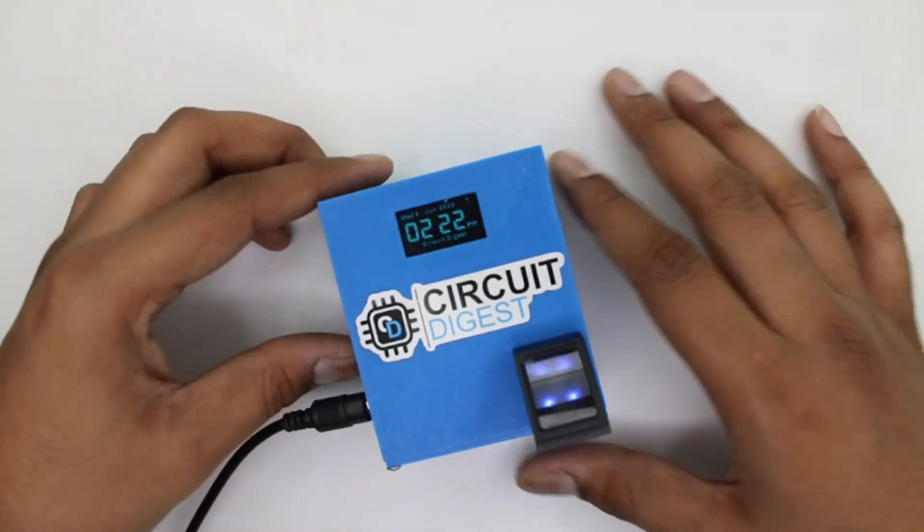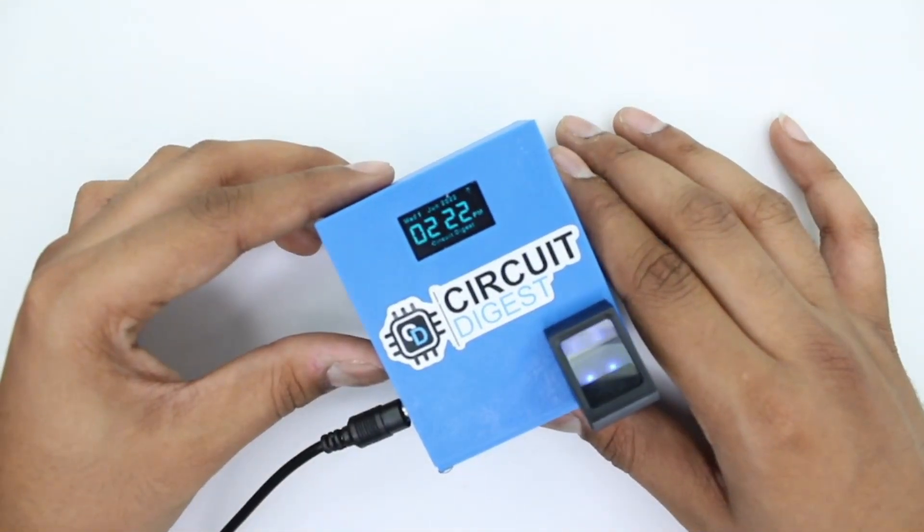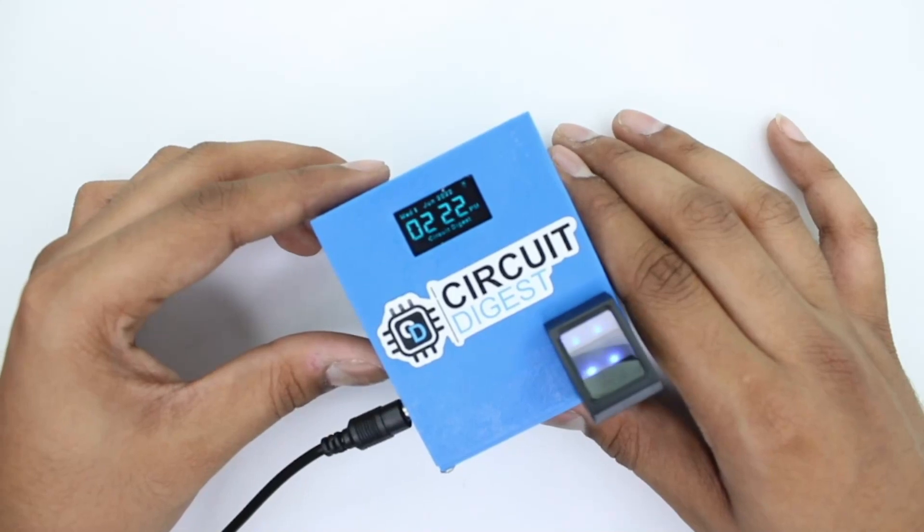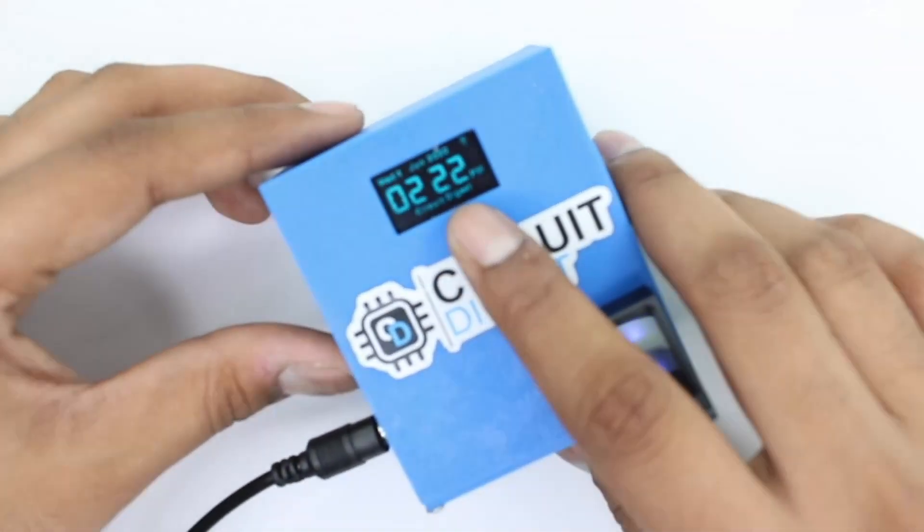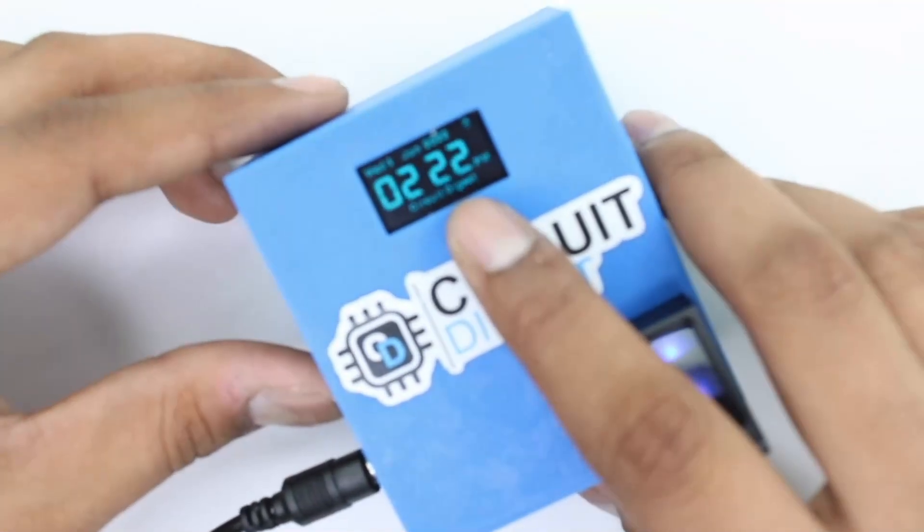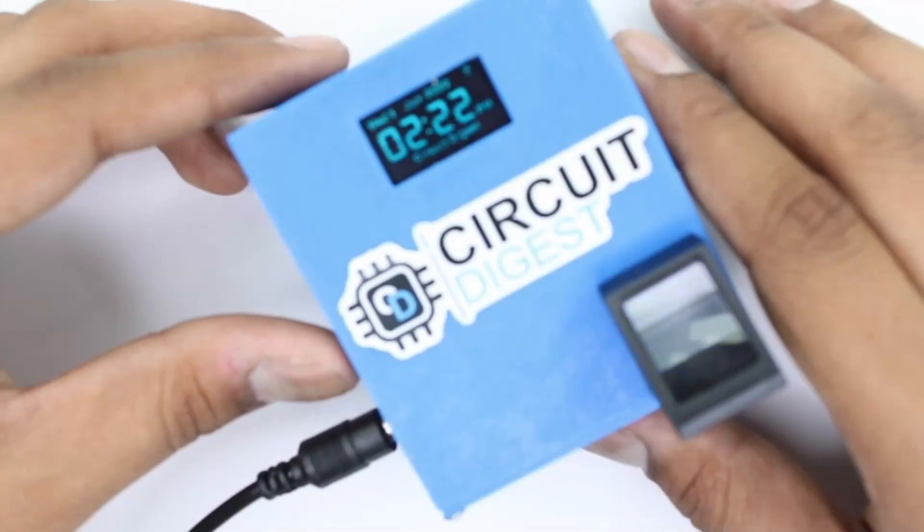As you can see, as soon as the module gets connected to the WiFi, time, date and month is displayed on the display. Apart from that you can see the company's name at the bottom of the display. So in our case it's Circuit Digest. This text is fully customizable and can be changed according to the needs.